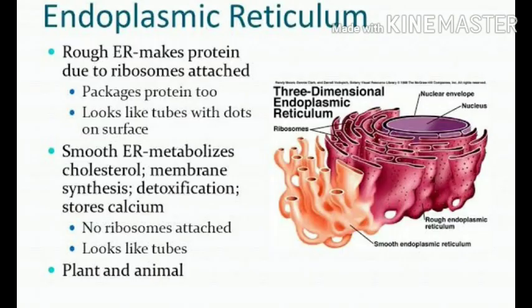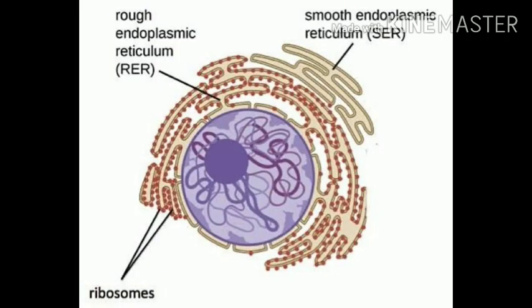Endoplasmic reticulum is an interconnected network of tubules — tubule means tube-like structure — and channels. They are of two types: SER and RER, that is smooth and rough endoplasmic reticulum. RER is that in which ribosomes are attached and synthesize protein, whereas SER synthesizes lipid and also helps in cleaning up harmful substances in the cell.